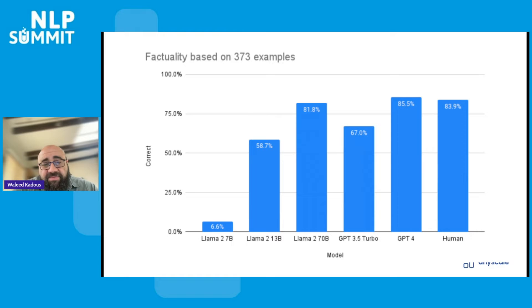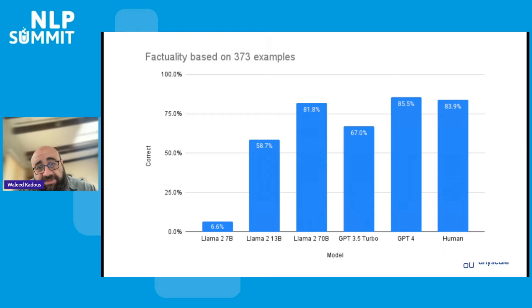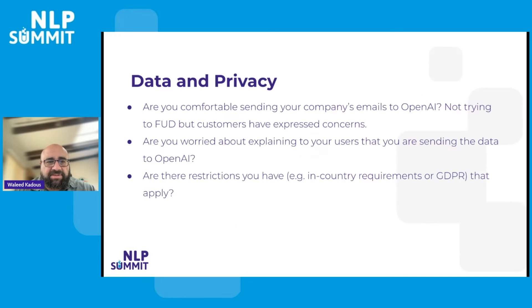That 84% accuracy is usually good enough for many applications. And there are some surprises here — like the fact that Llama 2 70B outperforms GPT-3.5 Turbo. That may not be universally true, but when it comes to summarization, that's definitely what we saw as we ran these experiments. So you can have the low cost and the quality too.